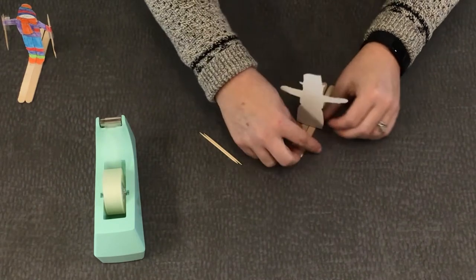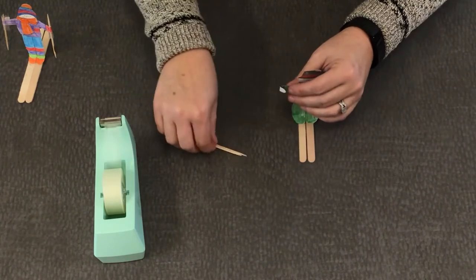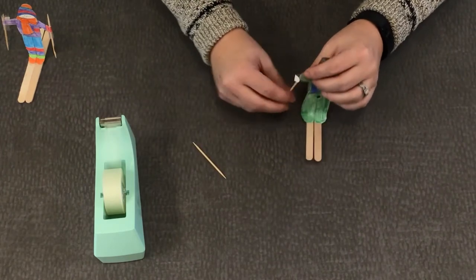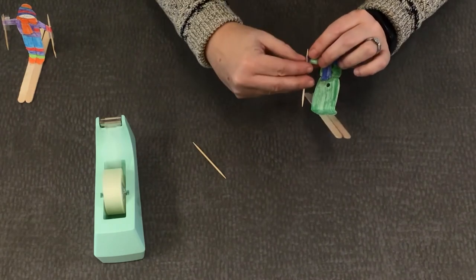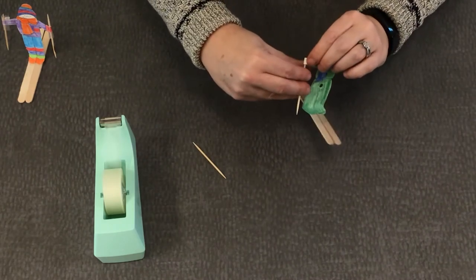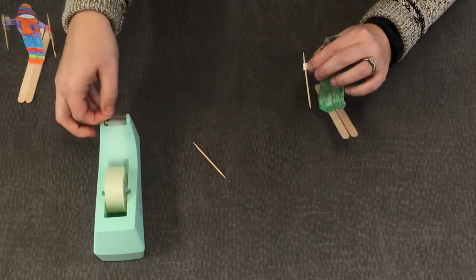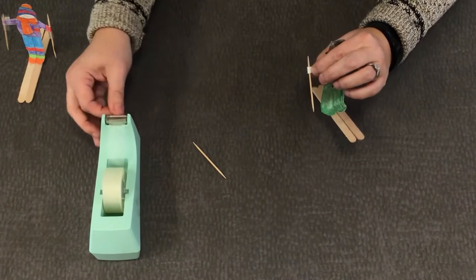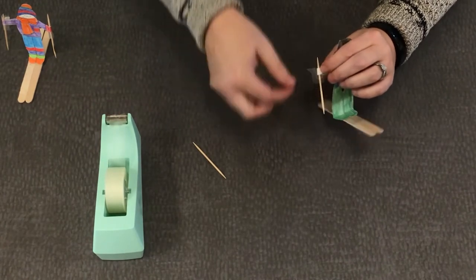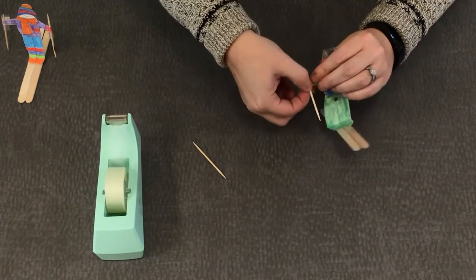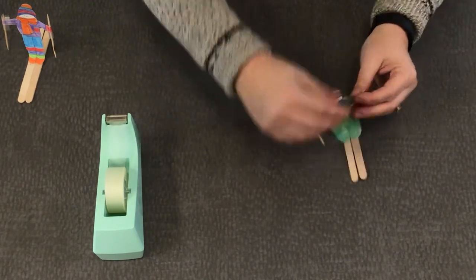To attach the ski poles, you just fold the hands over or backwards, whichever one you prefer, and curl it around the toothpick and attach some tape to tape it all together. And the same thing with the other side.